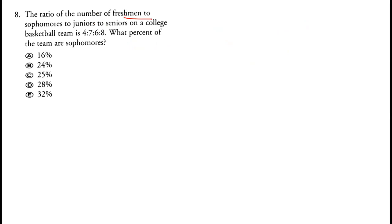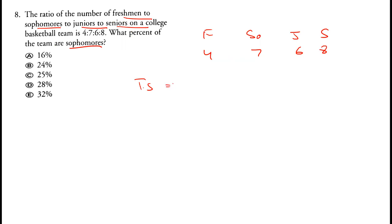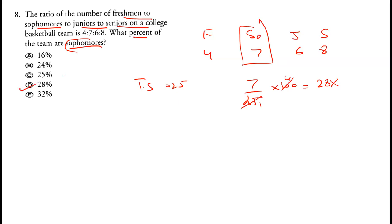The ratio of freshmen to sophomores to juniors to seniors on a college basketball team is 4 to 7 to 6 to 8. What percent of the team are sophomores? The total number of students is 4 plus 7 plus 6 plus 8, which equals 25. Sophomores are 7 out of 25, and 7 divided by 25 multiplied by 100 equals 28 percent. Option D is correct.